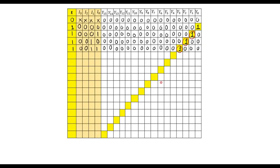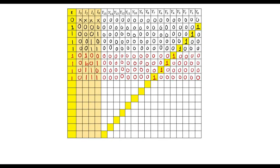Similarly, if I3=0 and I2=1, decoder B is selected. In that case, if I1=0, I0=0, Y4 is high; if I1=0, I0=1, Y5 is high; if I1=1, I0=0, Y6 is high; and if I1=1, I0=1, Y7 is high.